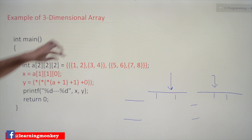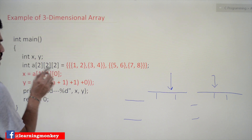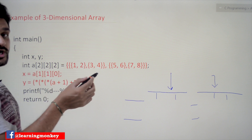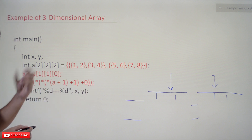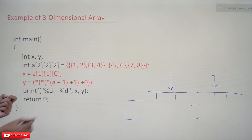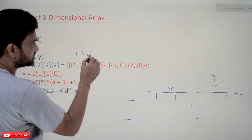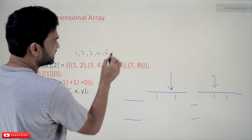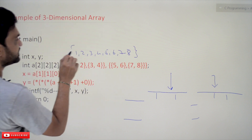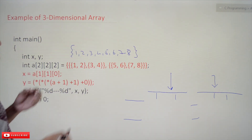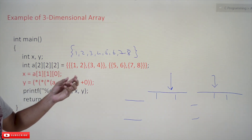As it is a 2x2x2 array, it has eight elements — we can enter eight elements into this array. In the previous initialization, we initialized the elements continuously, and the compiler would initialize each element accordingly based on the requirements of the array.